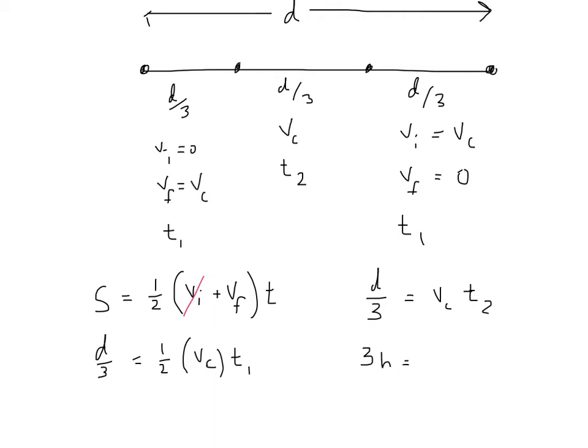So 3 hours equals, well, we could write T total, or we could write T total in terms of T_1, T_2, and T_1. So clearly we can see that the total time is T_1 plus T_2 plus T_1. In other words, 3 hours equals 2T_1 plus T_2. There it is. Beautiful.